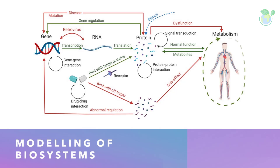Another important area is the modeling of biological systems. This involves creating mathematical models of biological systems, such as cells or populations, and using computer simulations to study their behavior. For example, computational models can be used to study the spread of diseases, predict the effects of drugs on cells, or understand the dynamics of ecosystems.